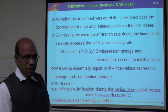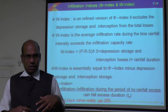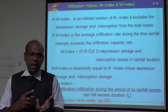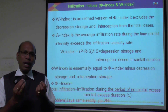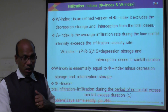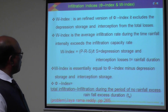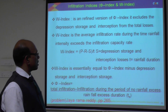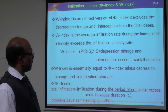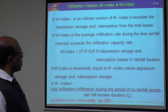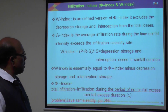At the W minimum state, the W index and phi index are almost equal. The W index is similar to the phi index, but it excludes initial losses — specifically depression storage and interception losses. Therefore, the phi index value is slightly smaller than the W index, because two initial losses are deducted from the phi index. The formula for the W index is: W = (Precipitation - Runoff - Initial losses) / T, where T is the rainfall duration and S is the depression storage.